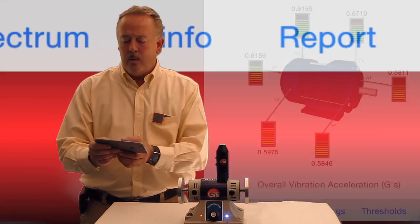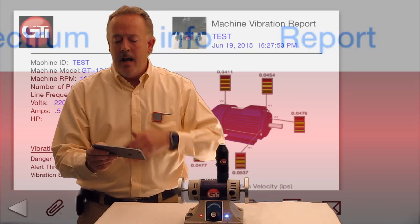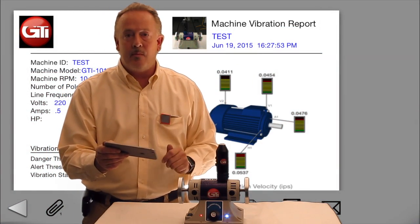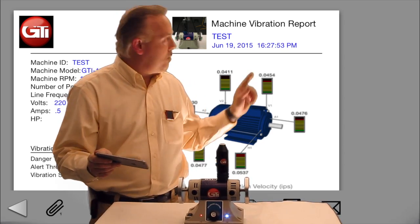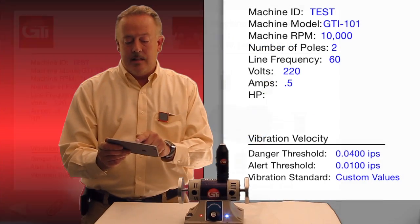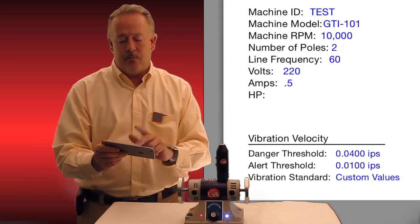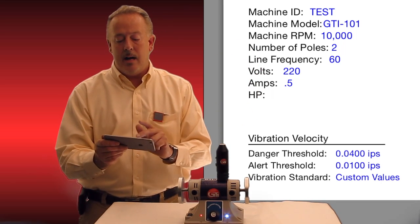And then what do we do after that? We simply hit the report button. Everything is laid out in front of me. I've got my logo, the name of what I tested, a photo of what I've tested, the date, the time, the frequency, my danger threshold, my alert thresholds are all in there either by ISO.